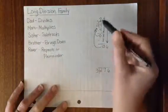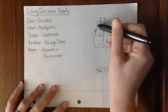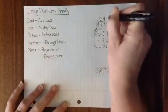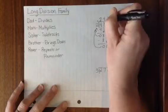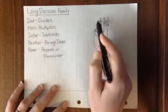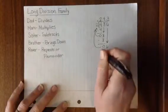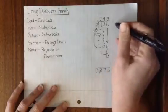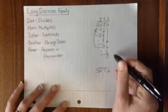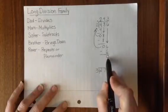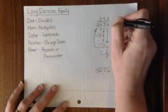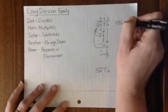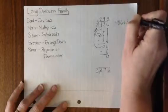Our process starts over. Dad has to divide. Dad says 6 divided by 2. 6 divided by 2 is 3. Mom double-checks and says 3 times 2 is 6. Sister subtracts. 6 take away 6 is 0. And there is nothing for Brother to bring down in our answer. There is no remainder for Rover. So the answer to our division problem, 486 divided by 2 equals 243.